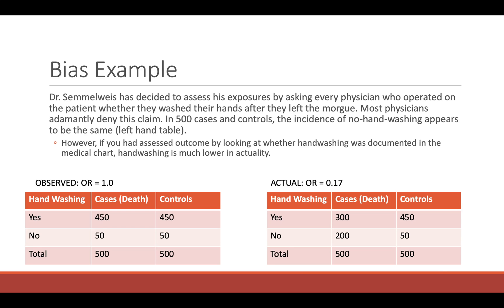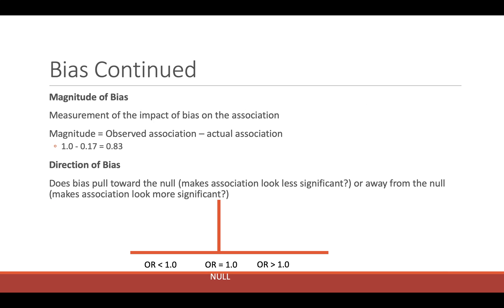Here's an example of how bias can affect results. Dr. Semmelweis assessed exposures by asking every physician whether they washed their hands after leaving the morgue. Most physicians adamantly denied this claim, and in 500 cases and controls the incidence of no hand washing appeared the same — odds ratio of 1. However, if the outcome had been assessed differently by looking at whether hand washing was documented in the medical chart, hand washing would appear much lower in actuality, giving an odds ratio of 0.17. The magnitude of bias equals observed association minus actual: 1 minus 0.17 equals 0.83.